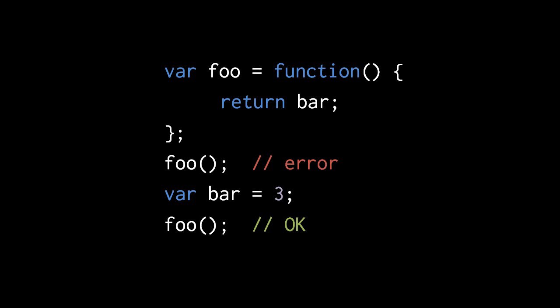Our second call to foo, however, is just fine, because it comes after the creation of the global bar. So the lesson is that for global variables, we have to make sure they exist before we actually use them.